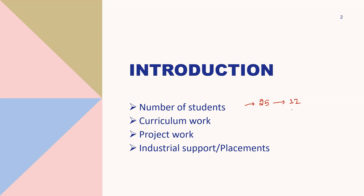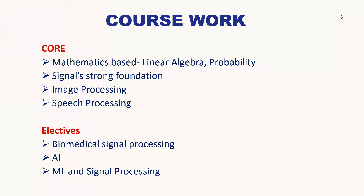Now the course work — I've mentioned a few subjects as core subjects and electives. The important thing is that whether it's electives or core courses, you have to be focused on the mathematics part, because the four courses provided in this branch are mathematics-based. Linear algebra and probability are very important because you're going to deal with signal processing and image processing. Coding is very important here. Machine learning and signal processing are present, and there's also an elective in artificial intelligence and biomedical signal processing.